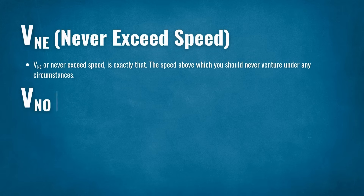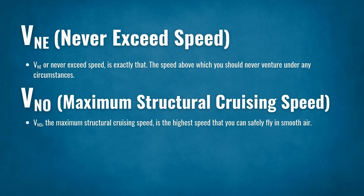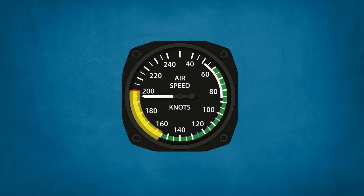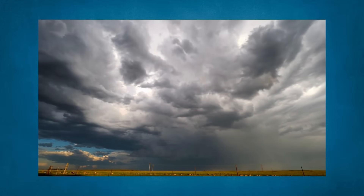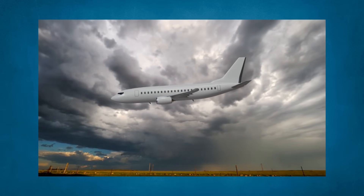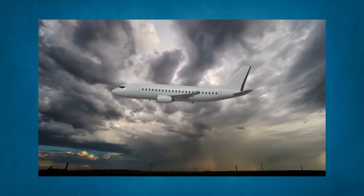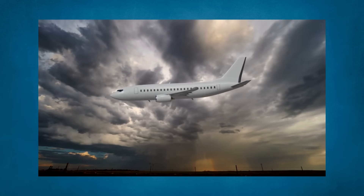VNO, the Maximum Structural Cruising Speed, is the highest speed at which you can safely fly in smooth air. VNO is marked by the upper limit of the green arc on the airspeed indicator. If you're above VNO — in the yellow arc or caution range — and you encounter air that is not smooth, you could cause damage to the aircraft. For example, if you encounter turbulence, the bumps will increase the load factor, and flying above VNO in these conditions could damage the aircraft's structure.